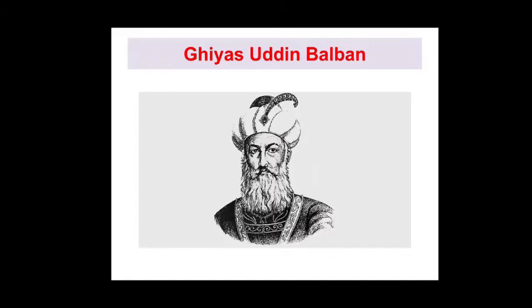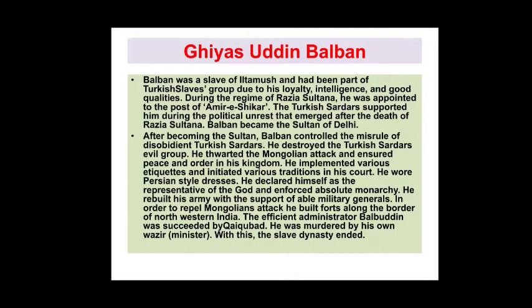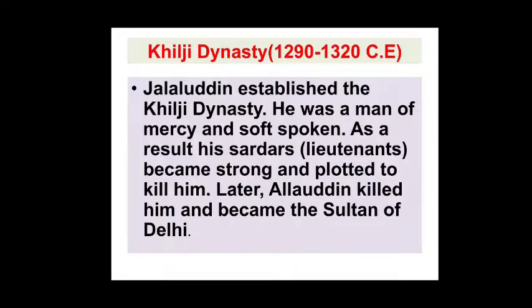Next is Ghiyasuddin Balban. He was also one of the slaves of Iltamash and had been part of the Turkish slaves group due to his loyalty, intelligence, and good qualities. During the reign of Razia Sultan, he was appointed to the post of Amir-i-Shikar. He supported Razia Sultan and was politically well-knowledged. Eventually, Balban became the Sultan of Delhi.